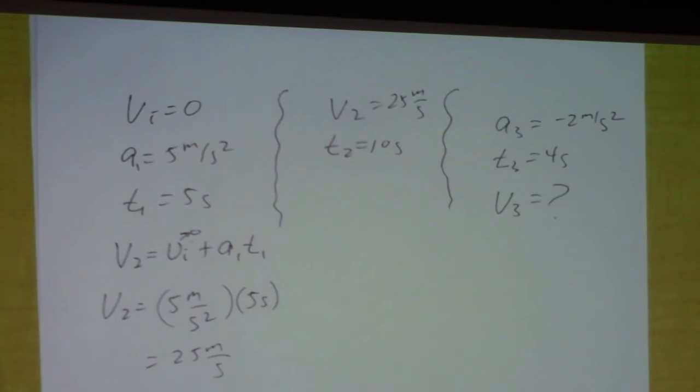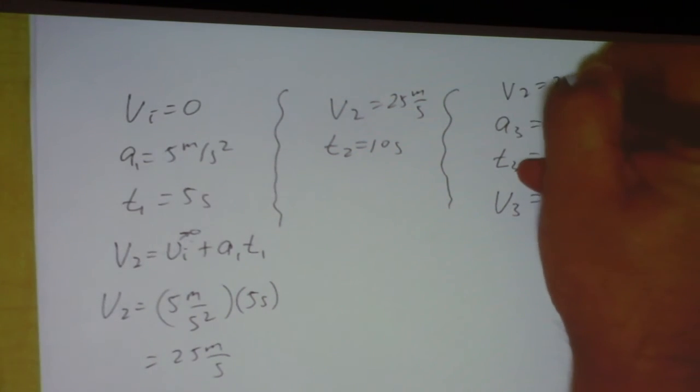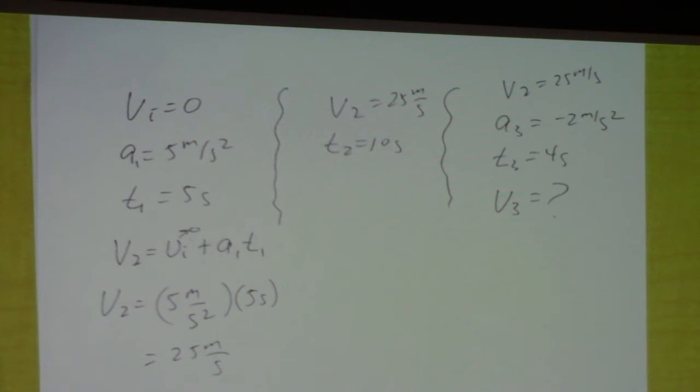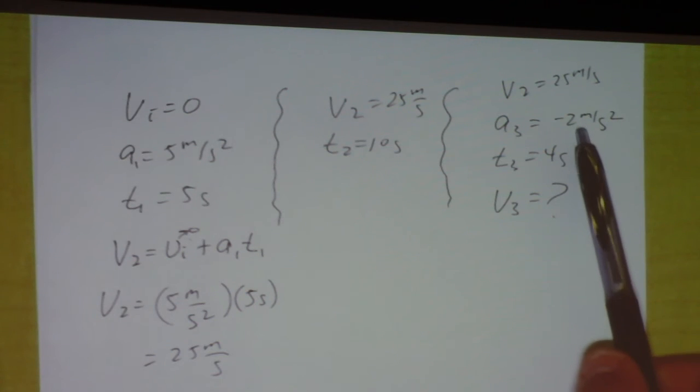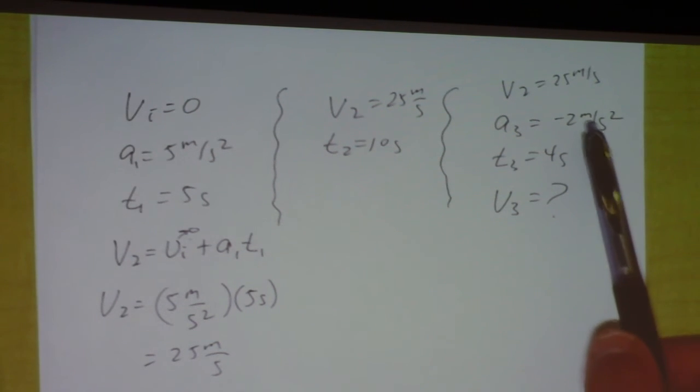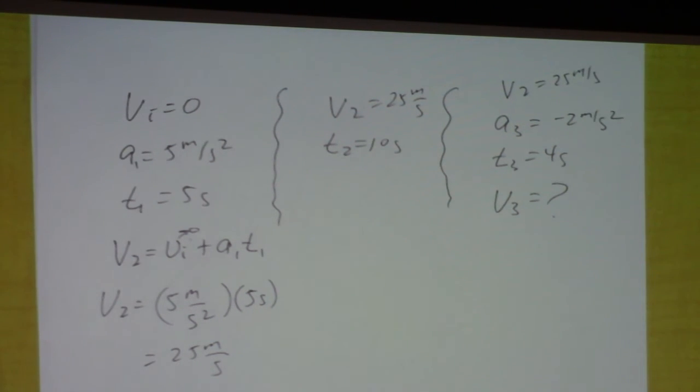And then you keep that over here for 10 seconds. There's actually more information than we need in this problem. And then over here you go from 25 meters per second down to something you're trying to figure out at this rate. So every second this goes down by 2. So if you start at 25, 1 second later you're down to 23, and then 21, and then 19, and then 17.